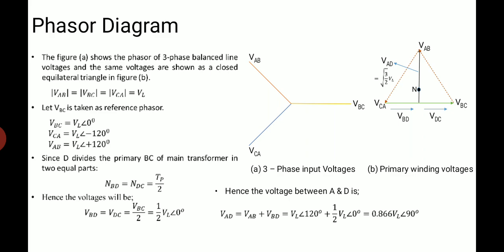VCA is 120 degree lag with respect to the voltage across terminals B and C, so it is VL angle minus 120 degree. VAB leads the voltage across terminals B and C, it is B and C by an angle of 120 degree, so it is shown as VL angle plus 120 degree.